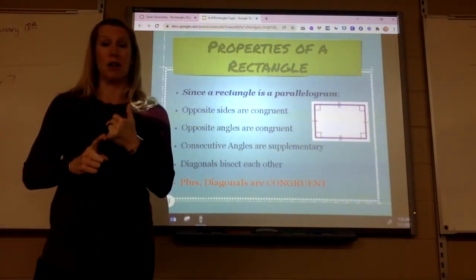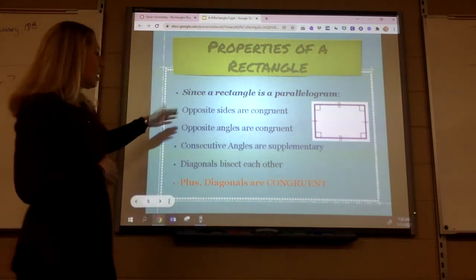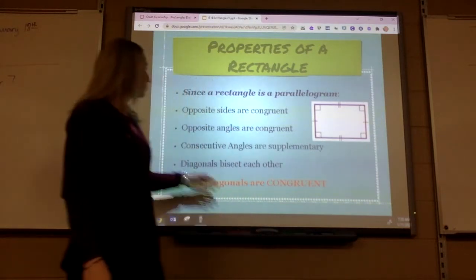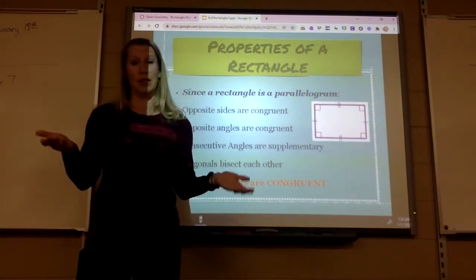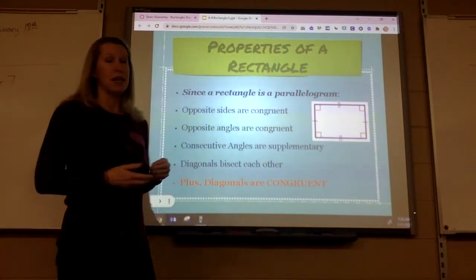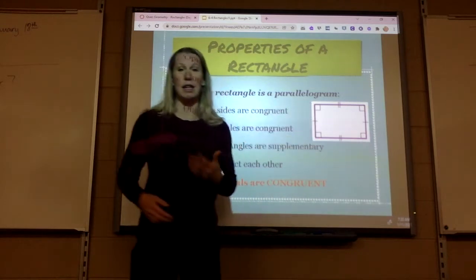Since a rectangle is a parallelogram, all the properties of a parallelogram will apply. Like for example, opposite sides equal each other. Opposite angles are congruent, which obviously they're both 90, so of course they would equal each other. Consecutive angles are supplementary. 90 plus 90 is 180.